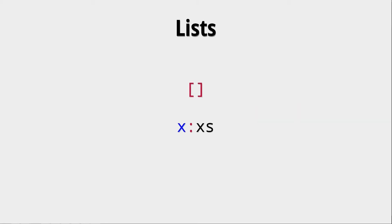Lists can be constructed by so-called constructors. There are two of them: the empty list, meaning the list with no elements in it, and then the colon or prepend or cons, whatever you want to call it.